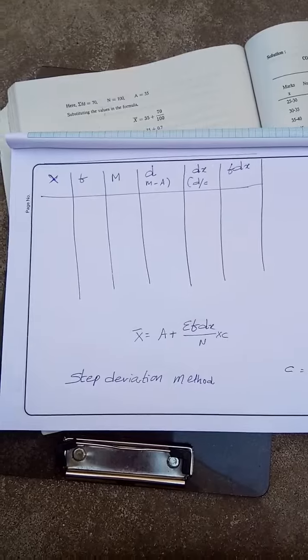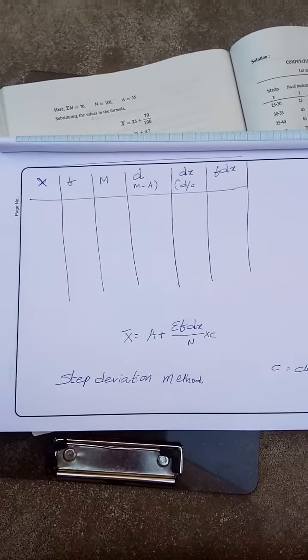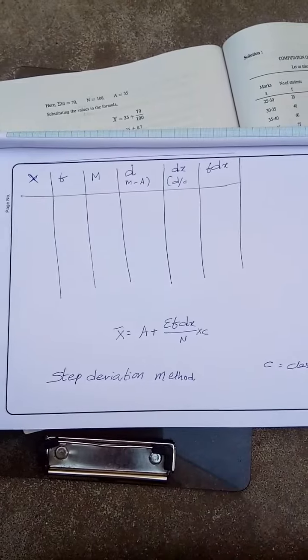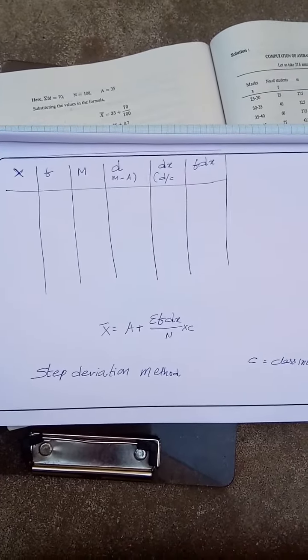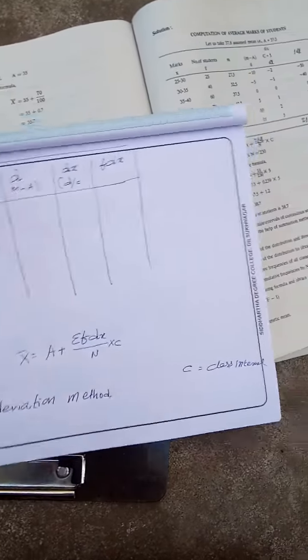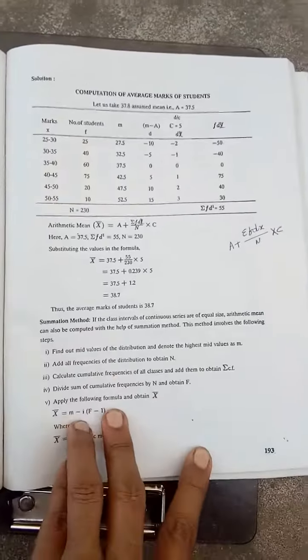So, immediately after that, the formula requires this. So, you need to make a table like this: x, f, mid-values, d (m-a), dx. dx is equal to d/c, then fdx.